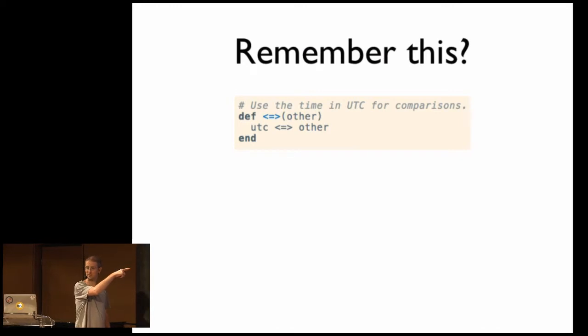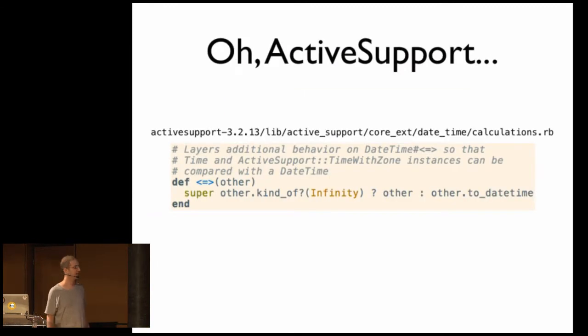Remember the spaceship operator that's being called on UTC, which is either a time or a date time. Well, it turns out active support, conveniently enough, redefines the spaceship operator for time and date time. Here it is for date time. And this one's pretty vanilla. It's simply taking this case of if you're comparing with infinity, then we're going to return infinity. Fine. I don't care. Otherwise, we're going to take the thing we're comparing to. We're going to convert it to a date time. So now we're comparing date times to date times. Okay. That seems fine. And by the way, active support defines two date time on probably a dozen objects. So, you know, this is a method that is going to work most of the time.